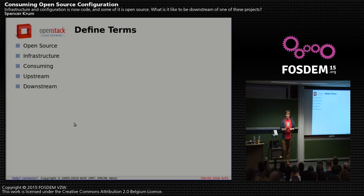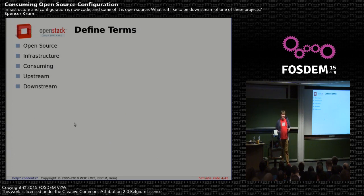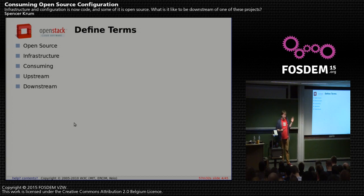So we always define our terms. Open source to me means something that has an OSI-approved license on it, but it also means a little bit more. When I first learned about open source, I was taught by Bart Massey, a professor at PSU. He said you can write open source software, put it on a hard drive in the basement, and it's just as open source as before. But there's an element of being able to share it that is required.